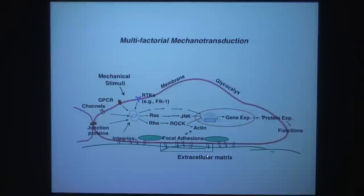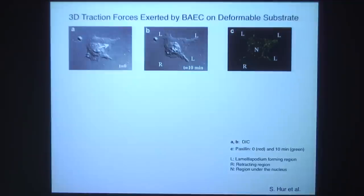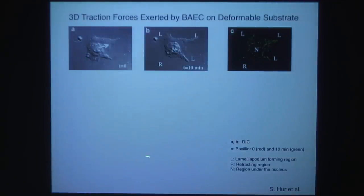I would like to show a slide on the basal aspect — the interaction between the cell and extracellular matrix. The method was invented by Yuli Wang at Carnegie Mellon: fluorescent beads are embedded in a gel, fibronectin is placed on top, and the cell is placed on top of that. The cell exerts traction forces that move the beads, allowing us to back out the forces the cells experience. This work was done by Song Her and others in our lab together with Drs. Juan Lasheras and J.C. del Álamo.